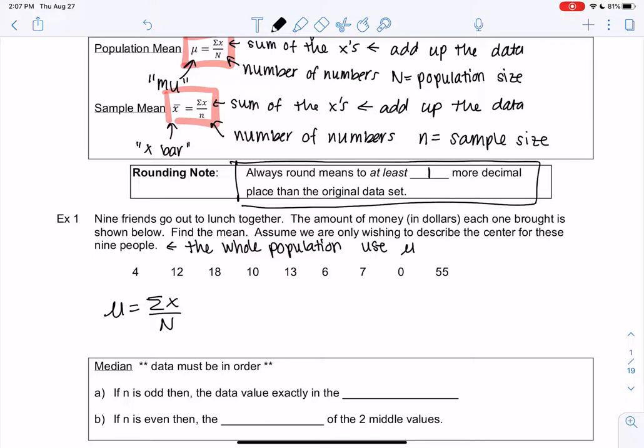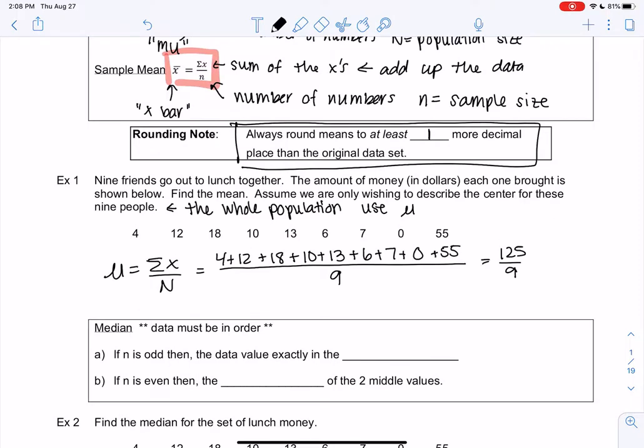So we will use mu equals the sum of the x's all over n. And the sum of the x's is just adding them up: 4 plus 12 plus 18 plus 10 plus 13 plus 6 plus 7. And then we have this really stingy friend with only $0 and then a really nice friend with $55. Since there's nine friends, my population size is nine. So I'm going to add those up. I get 125 and then we'll divide by nine. We should get 13.888888, a lot of eights and then a nine at the end.